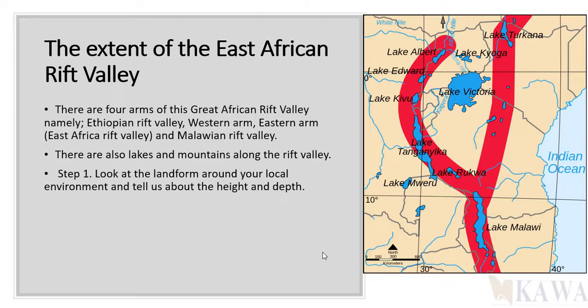Here is an exercise. Step one: look at the landforms around your local environment — which physical features are there? Are there rivers? What is the name of the river next to you? Is there a valley, a plateau, a flatland called a plain? Move out of your house and tell us the features you see around your home area. Step two: describe what you think the rift valley looks like in your own way from what has been described or from what the teacher has taught you.